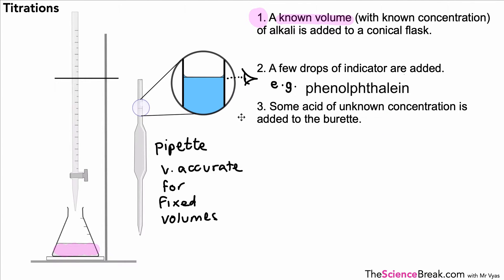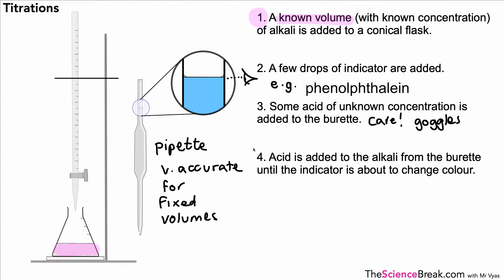So there's our alkali with indicator in the flask. We add some acid of unknown concentration to the burette. We have to be very careful, wear our goggles, make sure we use a funnel and not just pour it straight in.